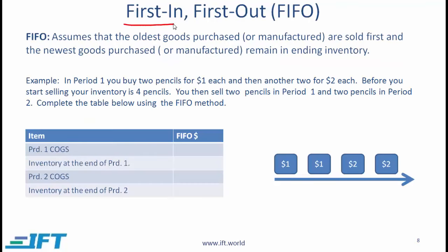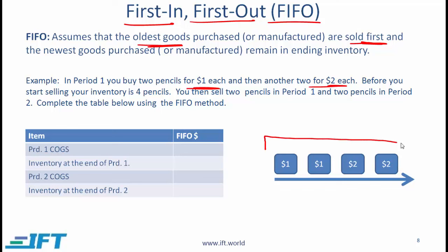Another inventory valuation method is first in first out, or FIFO. This assumes that the oldest goods purchased or manufactured are sold first, and the newest goods purchased or manufactured remain in inventory. Let's understand this through a simple example. In period 1, you buy 2 pencils for $1 each and then another 2 for $2 each. So initially your inventory has 4 pencils — 2 purchased for $1 each and 2 purchased for $2 each.